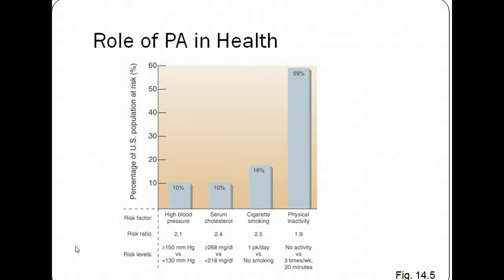We want to work on that because if you look at the risk ratio — that's how much your risk increases by that factor, where one is normal — levels around two mean your risk is doubled. Being physically inactive is the same risk as having high blood pressure or poor cholesterol, and is a little less than smoking. The actual numbers of people affected by physical inactivity are much, much larger than the number of people affected by smoking.